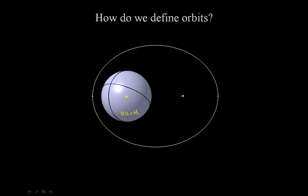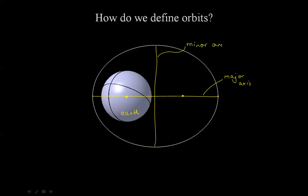In this orbit we see that there is a long axis, because it is an ellipse, and as any ellipse there is a short axis. The long axis is known as the major axis, and the short one is known as the minor axis. Along the major axis, there is a point that comes closest to the center of the Earth — the periapsis — and another point that goes furthest away from the center of the Earth — the apoapsis. These two points together are known as the apsides. Apo for furthest and peri for closest or nearest.